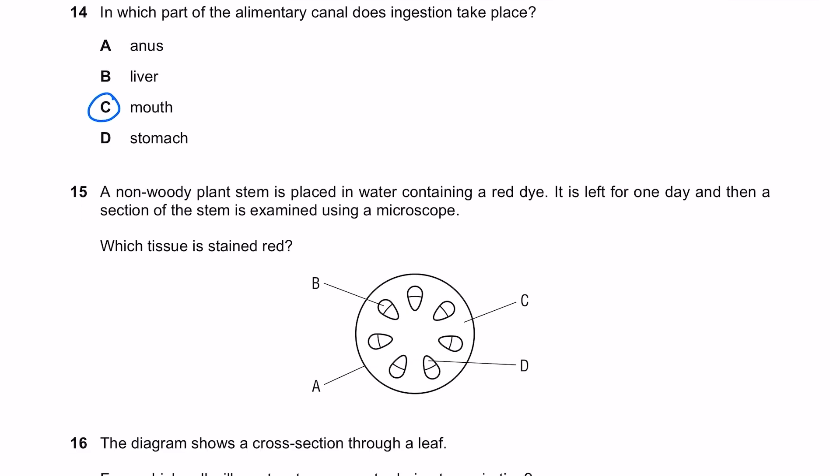A non-woody plant stem is placed in water containing a red dye. It is left for one day and then a section of the stem is examined using a microscope. Which tissue is stained red? The fact that we're talking about water means it needs to be the xylem. The xylem in the stem is the inner portion, so it's D.